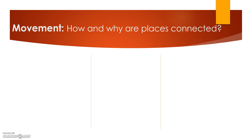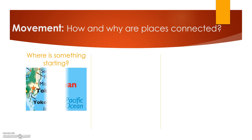There are three things we take into consideration when talking about movement. First is where is something starting? This could be some sort of good or product being sent through the mail, by Amazon, FedEx, UPS, or whatever. It could also be information or news. In this case, let's say the where is Tokyo, and the product is a pair of socks.